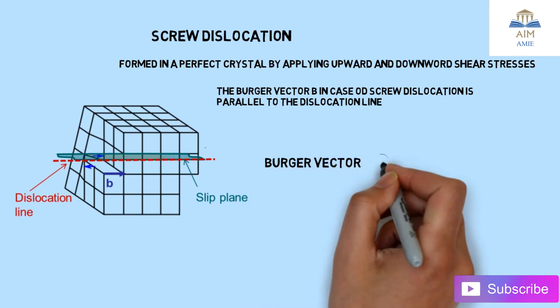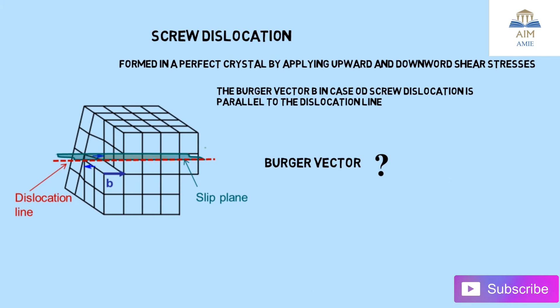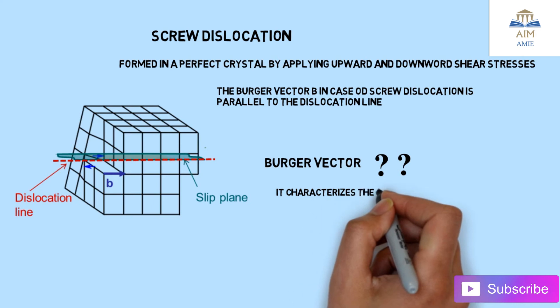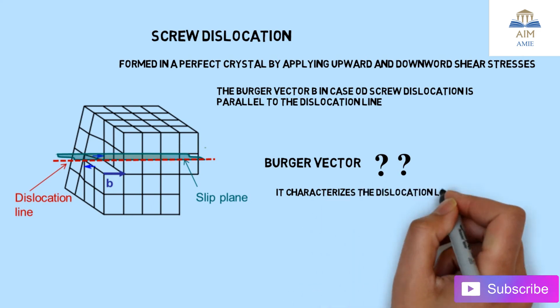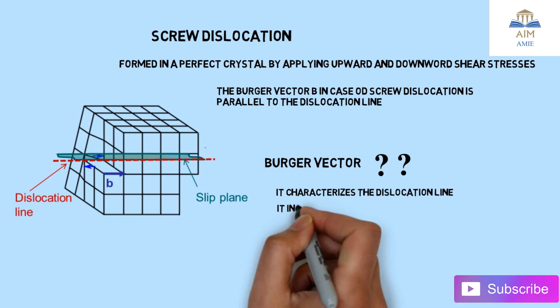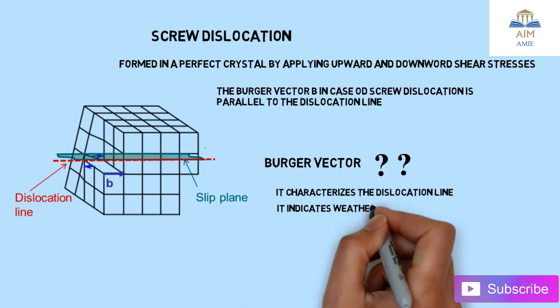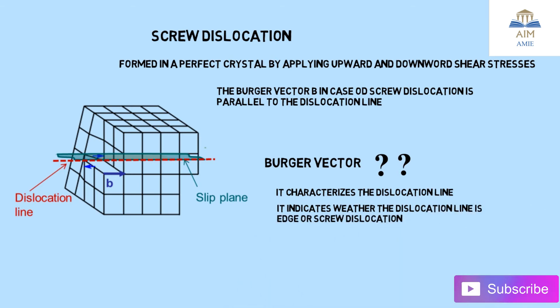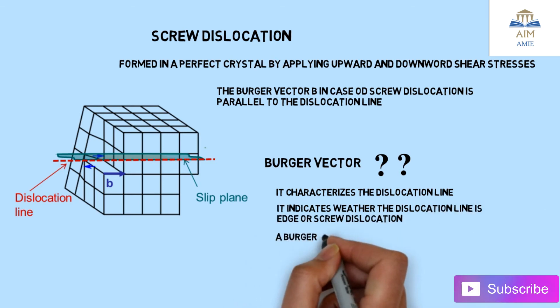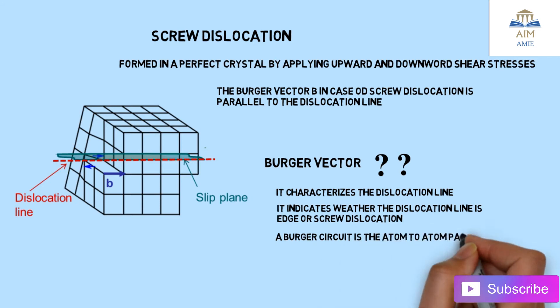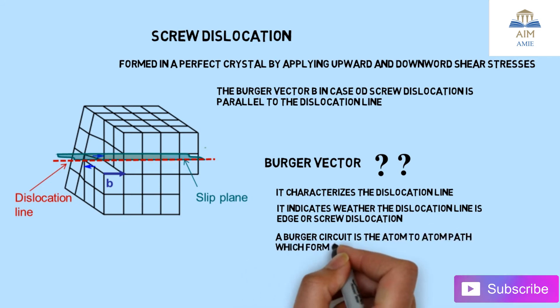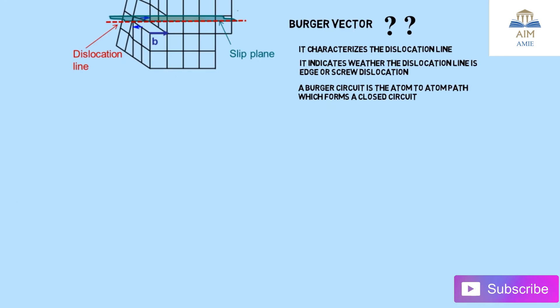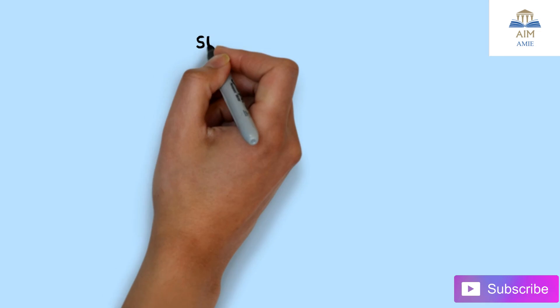What is the Burgers vector? The Burgers vector characterizes the dislocation line — it basically indicates whether the dislocation line is an edge or screw dislocation. A Burgers circuit is the atomic path which forms a closed circuit, known as a Burgers circuit.